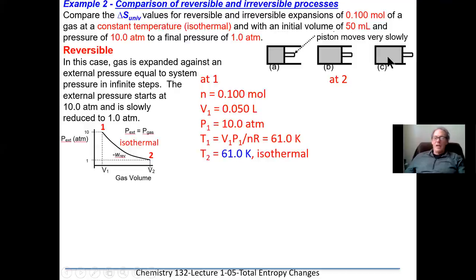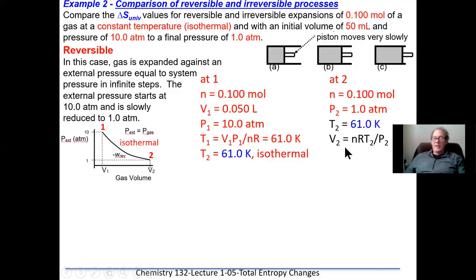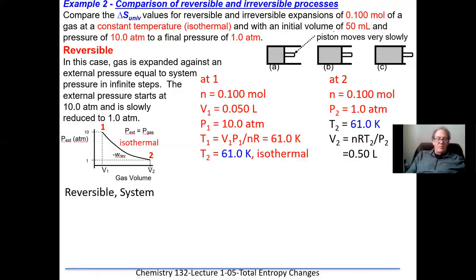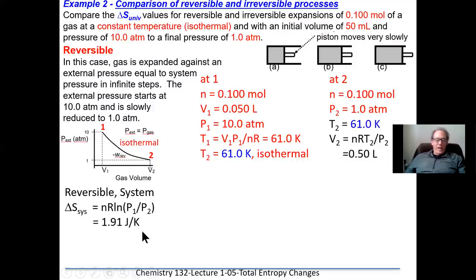V2 equals nRT2 divided by P2. Substituting the values for T2, P2, n, and R, we end up with 0.50 liters. In the reversible system, there's a change in pressure, so we can calculate the entropy change for the system as delta S_system = nR ln(P1/P2), which equals 1.91 J/K. The entropy has increased for this system — does that make sense? The gas has expanded, so it's more random at a higher volume and lower pressure than at a lower volume and higher pressure.